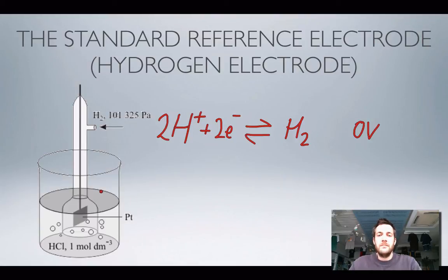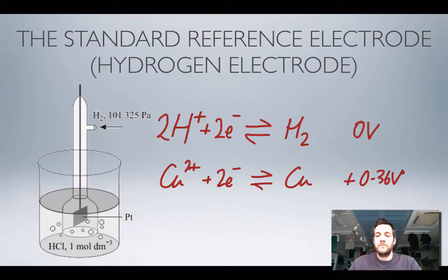Now this doesn't mean that hydrogen leaves no electrons behind on this strip of platinum. It just means that we're going to refer to it as having a voltage of 0 volts. And because copper leaves fewer electrons behind on the strip of metal than hydrogen does, it can have a more positive electrode potential or reduction potential than hydrogen does.